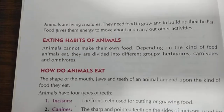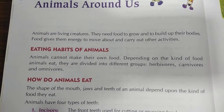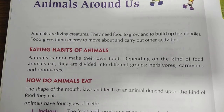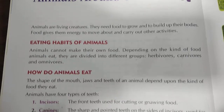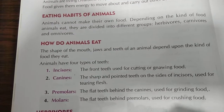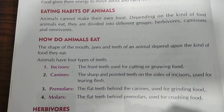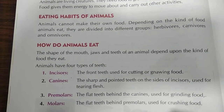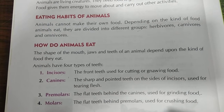How do animals eat? The shape of the mouth, jaws and teeth of an animal depend upon the kind of food they eat. Animals have four types of teeth: first is incisors, second canines, third premolars, and fourth molars.